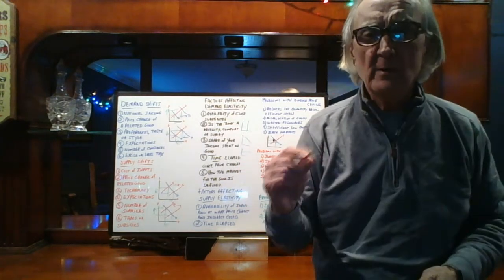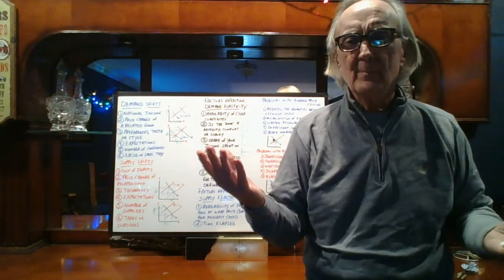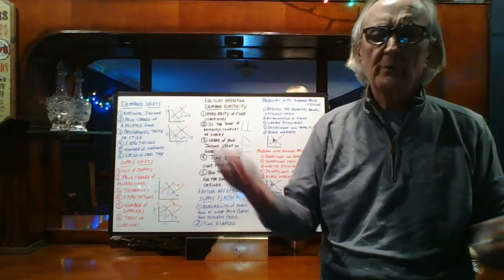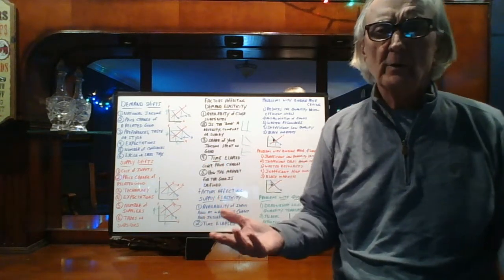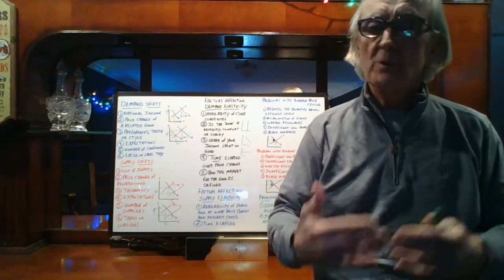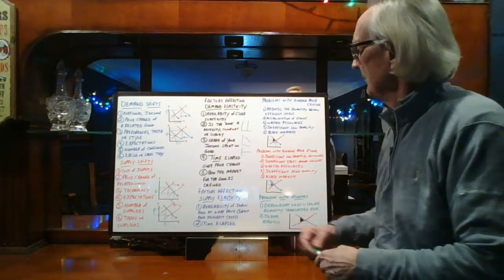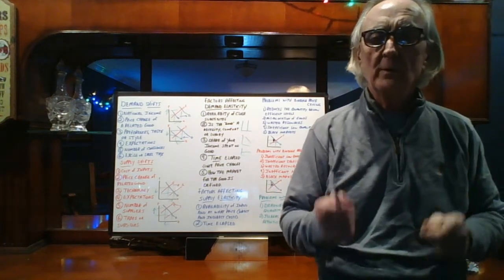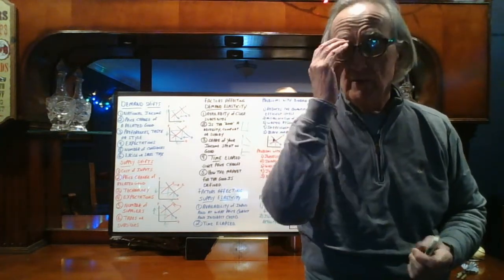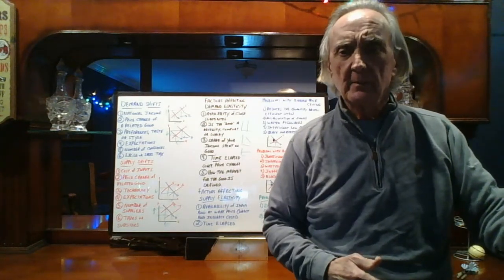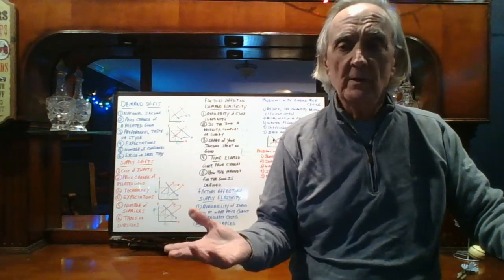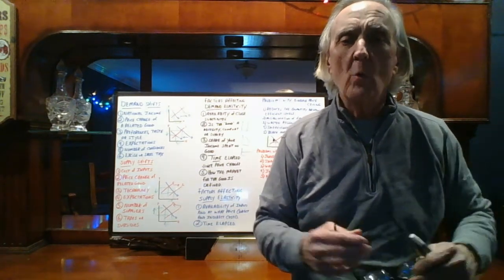Third factor: share of income you spend on the good. If it's a tiny percentage — say a two-dollar spice that goes to three dollars at Christmas — you'll still buy it. But for big-ticket items like a car or a home, you have to reconsider because it's a large chunk of income. Fourth factor: time — more time always makes demand more elastic because you have more opportunity to find ways around a price increase, like carpooling when gas prices rise.